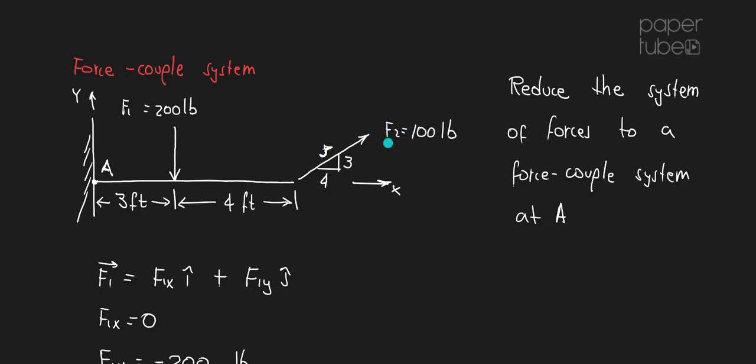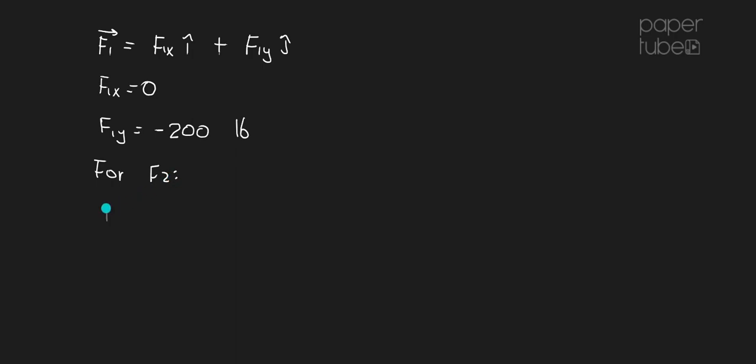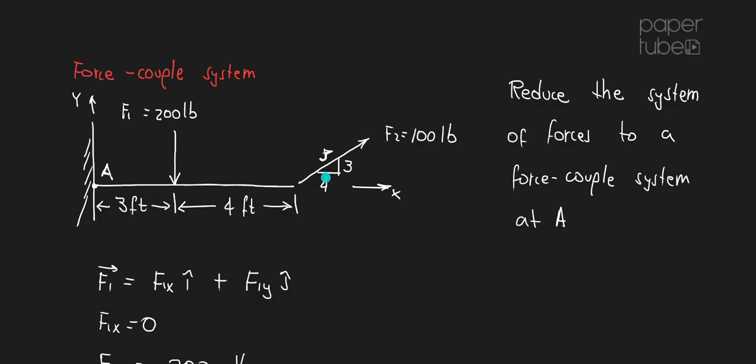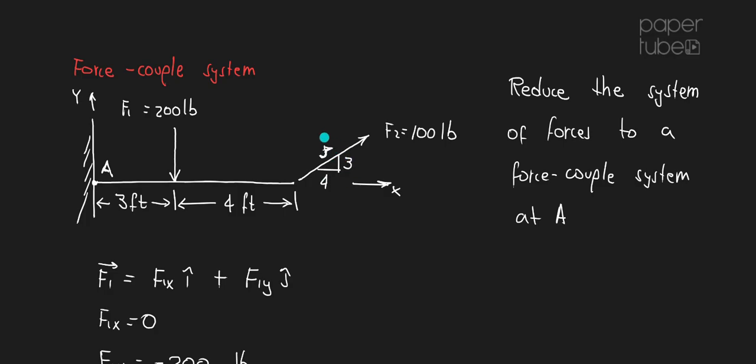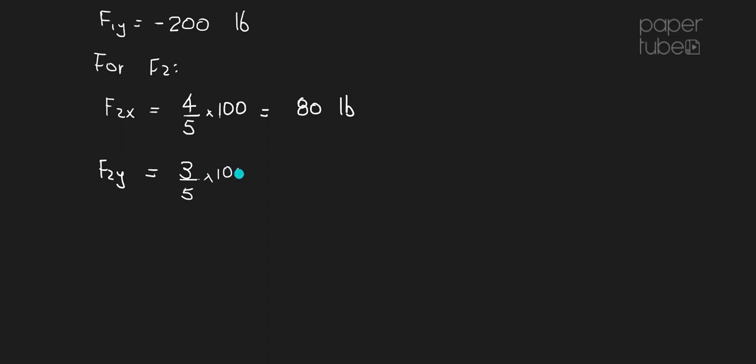We can also do the same thing for F2. And for F2, we have that my F2x, that's going to be based on this triangle. We're going to have that in the x direction, when it goes 4 in this direction, it goes 5 in that direction, so it's going to be 4 fifths of the magnitude of the force times 100, and I believe this gives me 80 pounds. My F2y is going to be equal to, that will be in this direction, so it will be 3 over 5. 3 over 5 times 100, and I think this is 60 pounds. Very good. So I'm doing this scalar analysis. We can also do it vector analysis. We're going to obtain the same answers.